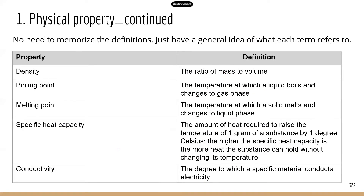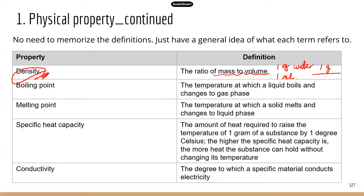I made a table to summarize some of the common physical properties with their definitions, so you have an idea what each property is about. The most important one is density because it is used a lot in real life. Density is the ratio of mass to volume. For example, if you have one gram of water and you measure the volume — let's say one mil — the density is going to be mass (one gram) divided by the volume. So that will be a density of one gram per mil for water.